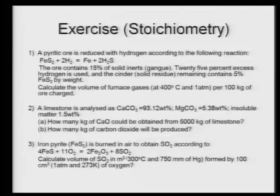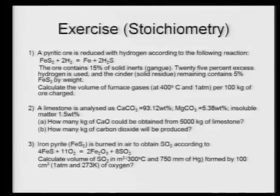Problem 3: Iron pyrite reacts as 4FeS + 11O₂ = 2Fe₂O₃ + 8SO₂. Calculate the volume of SO₂ in cubic meters at 300°C and 750 mm of mercury formed by 100 cm³ of oxygen expressed at 1 atm and 273 Kelvin.